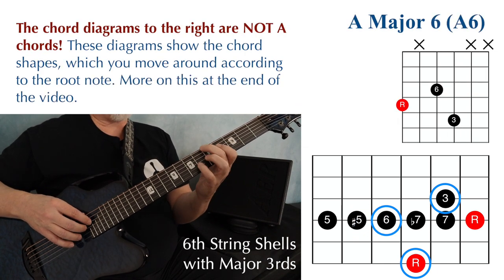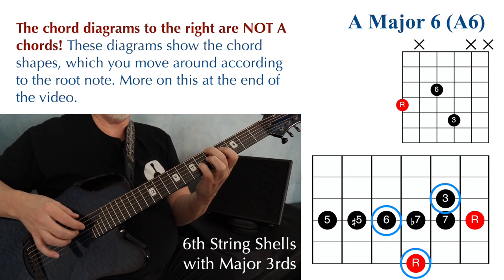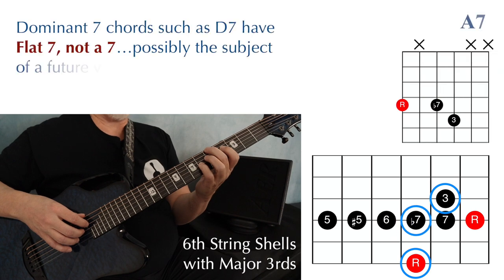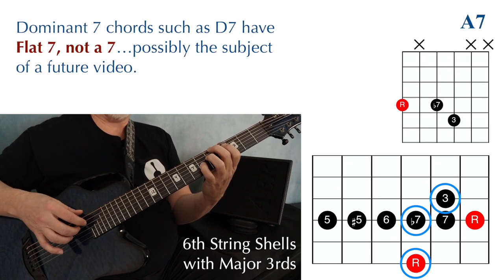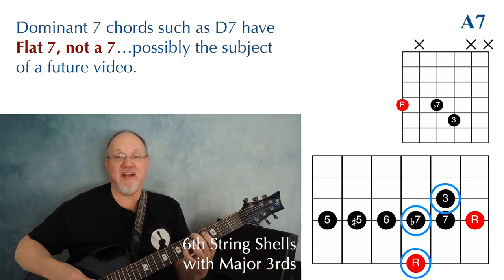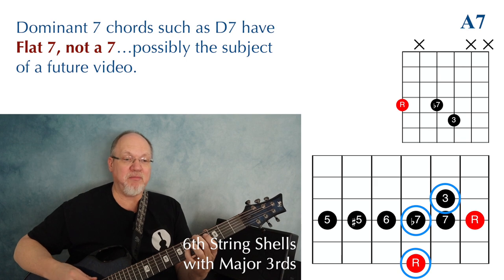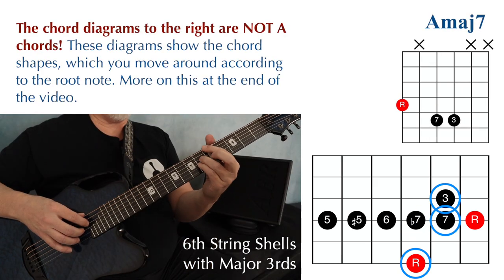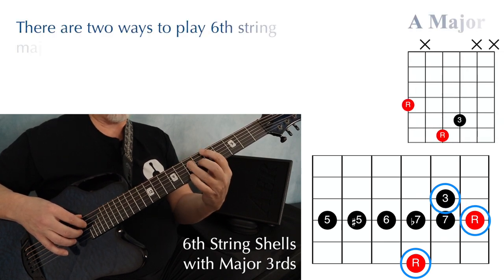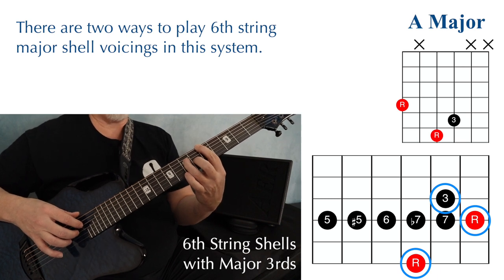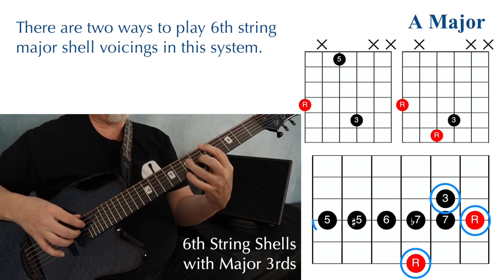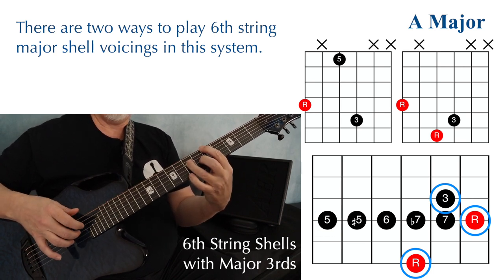Moving that fourth string note again gives a major six chord, labeled A6. Moving to the flat seven gives a dominant seventh chord, labeled A7 — and again, even though this chord has a flat seven in it, it's labeled A7. Moving the fourth string note one fret higher gives an A major seven. Moving it again gives another A major chord, but this time with two roots and a third on top.